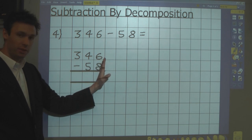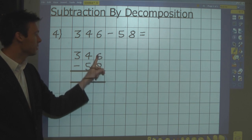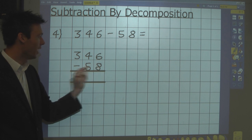I do the least significant digit first, in which case it's the units, so 6, take away 8.